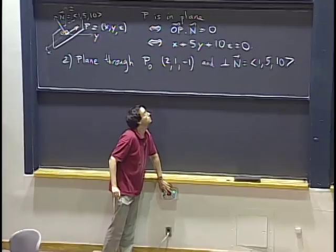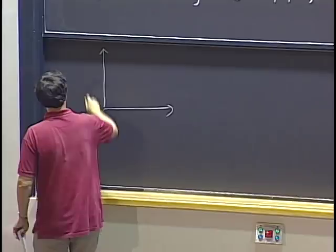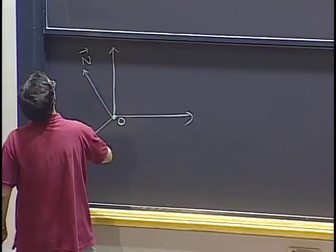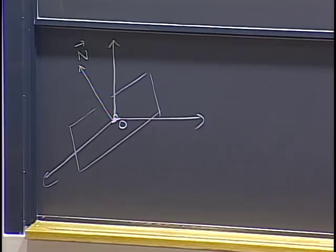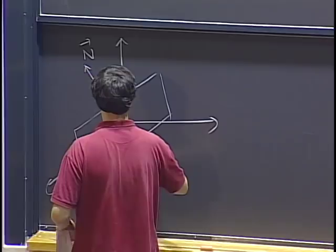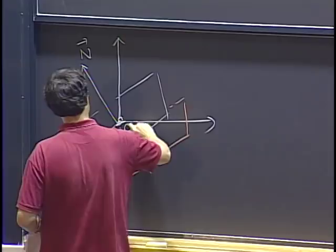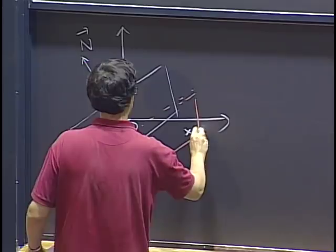We are going to use the same method. The normal vector n is perpendicular to both planes at the same time, so our two planes will be parallel to each other. Before, we had a plane perpendicular to n passing through the origin. Now we have a new plane that's going to pass through point P₀. For a point P to be in the new plane, we need the vector P₀P to be perpendicular to n.